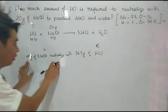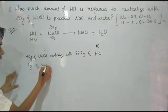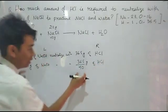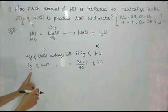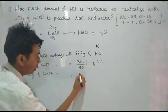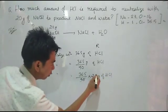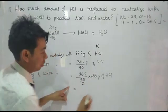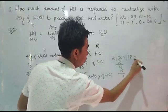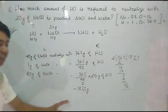40 grams of sodium hydroxide neutralizes with 36.5 grams of HCl. So 1 gram of sodium hydroxide neutralizes with 36.5 ÷ 40 grams of HCl. Now, the question asks about 20 grams, so: 20 grams of sodium hydroxide neutralizes with (36.5 ÷ 40) × 20 grams of HCl. Simplifying: 36.5 ÷ 2 = 18.25 grams. The answer is 18.25 grams.